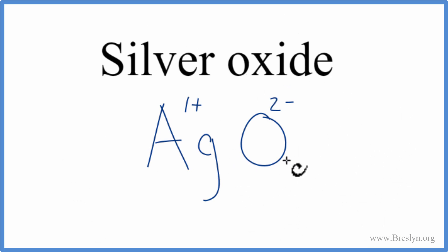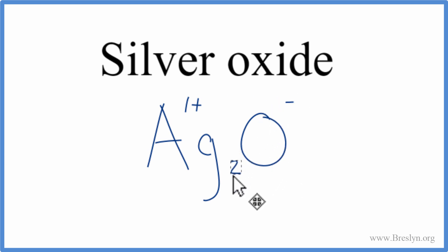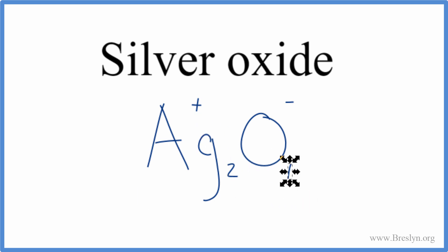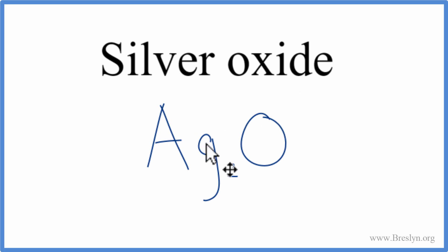We can change the subscripts to make that happen, and we'll use the crisscross method. So we take the 2 and move it down here, and the 1 we move over here. We don't write the 1 by convention, and we can get rid of the charges as well. And this is the formula for silver oxide: Ag₂O.